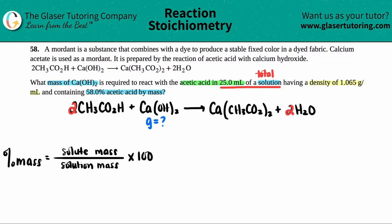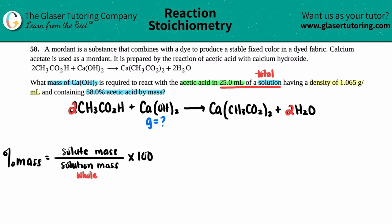Percent mass is just a fancy way of saying part over whole — any percentage is a part over whole. The solution is the total, or the whole. The solute is the part. They're telling us acetic acid is in the solution, so the solute — the part — is the acetic acid, CH₃CO₂H. Since it's percent by mass, the top and bottom numbers should both be in mass units, grams over grams.